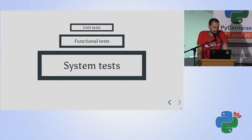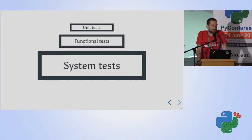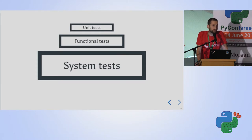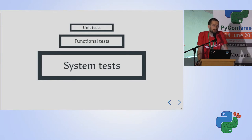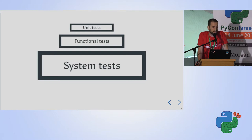That leads us to functional testing. In functional testing you test the functionality of your application, and usually that involves more than one component — several functions, services, or classes. You might or might not mock things. Going back to the database example: if my application supports five different databases like SQLite and MySQL, in functional tests I might mock it out or use SQLite, because what I really care about is the functionality of the application — not how the database behaves with my application.